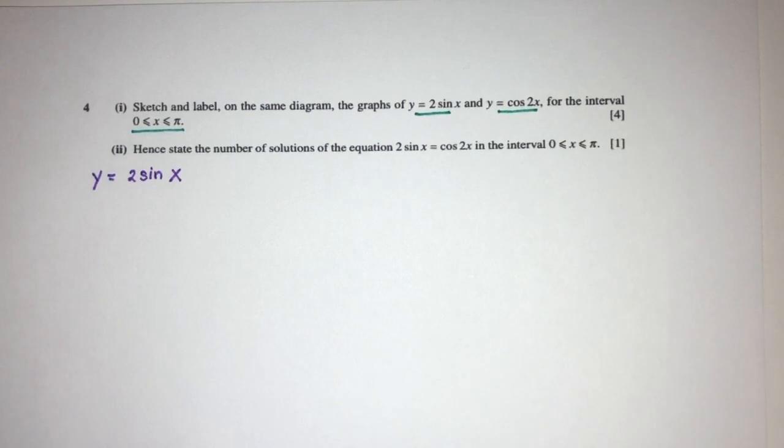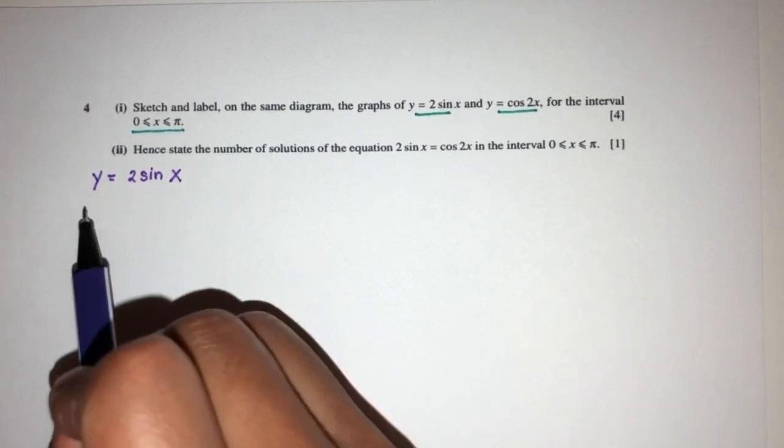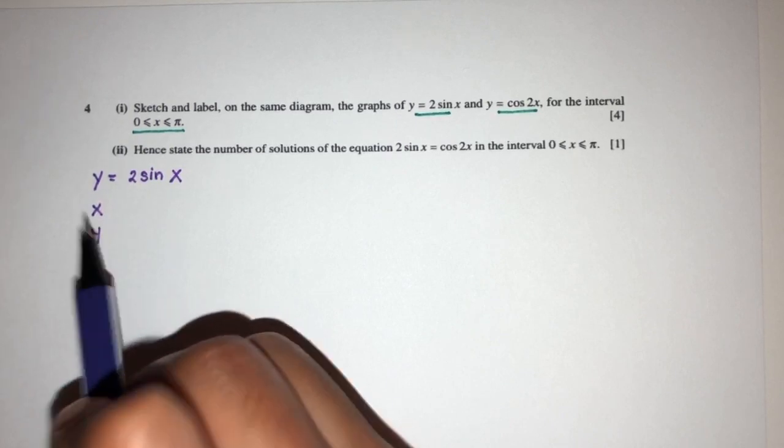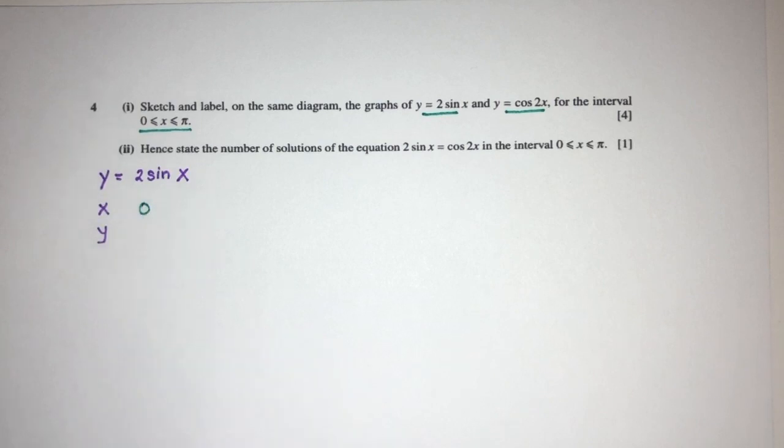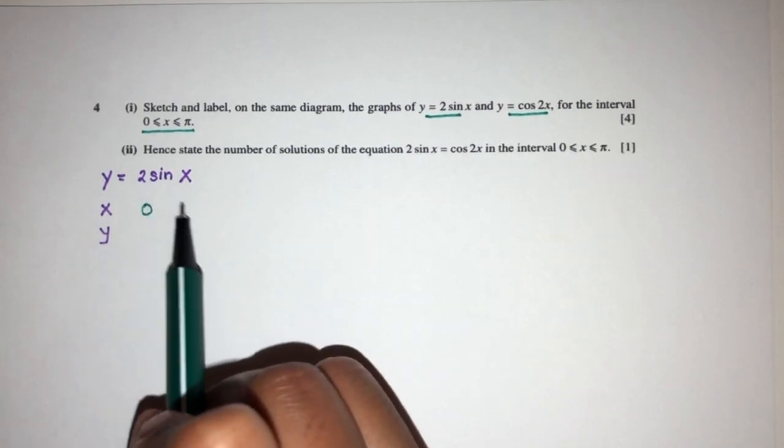As always, whenever we have to sketch a graph, use a table of values. So here we have the x value and the y value. We have from 0 to π. I begin with 0. Now what is the interval that I will choose?